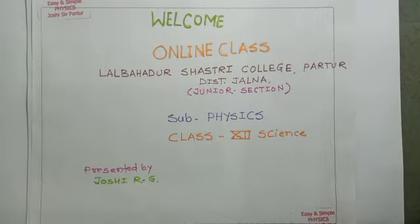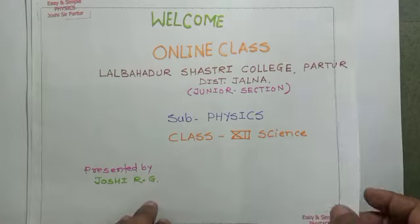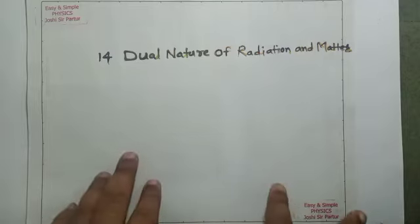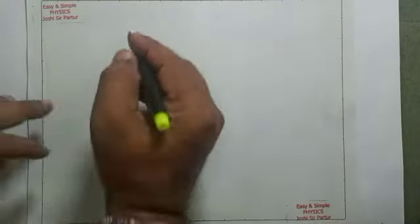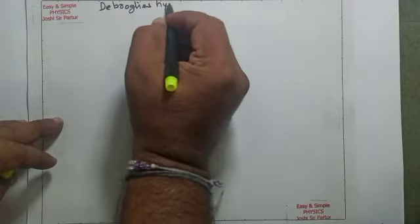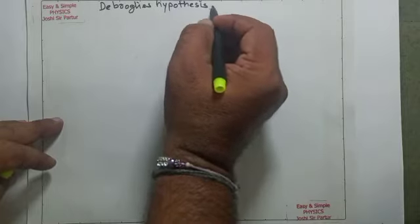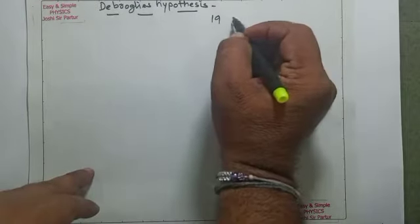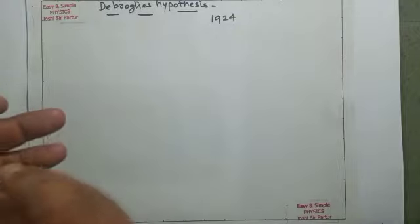Welcome students to the online class for the subject Physics for Standard 12th Science. Today we have to learn Chapter 14: Dual Nature of Radiation and Matter. We have seen de Broglie's hypothesis. In 1924, Louis de Broglie proposed, on the basis of symmetry existing in nature, that if radiation has dual nature...